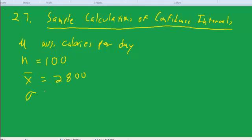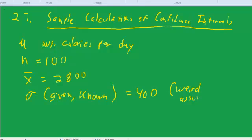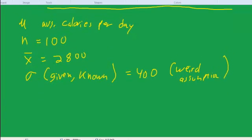And suppose that the standard deviation, and this is where I'm going to make a weird assumption, is given and known to equal 400. That's a weird assumption that allows me to use this technique. And then we'll change that assumption at a later point, where we estimate the standard deviation. And so the question is, what is a 95% confidence interval for mu?